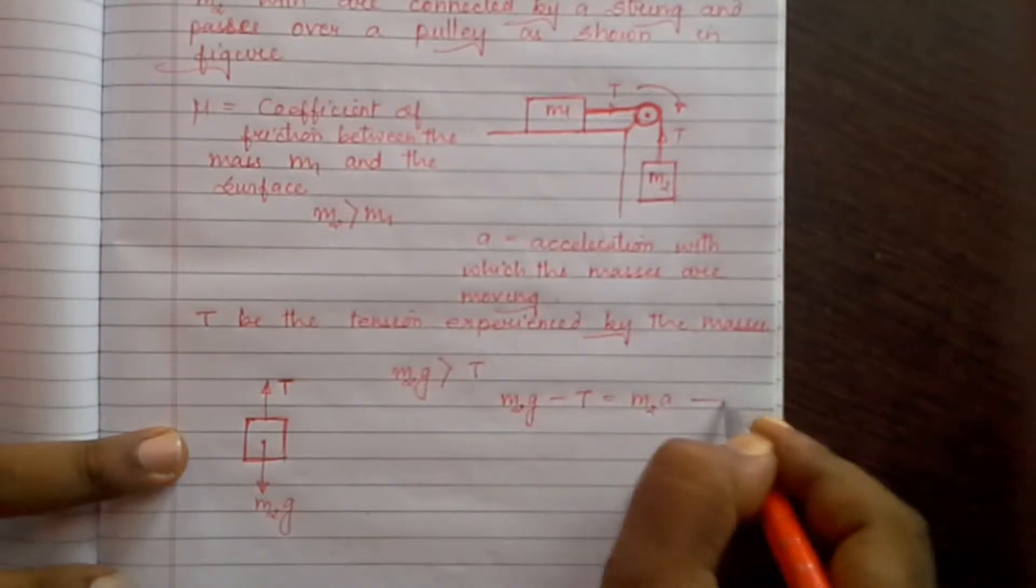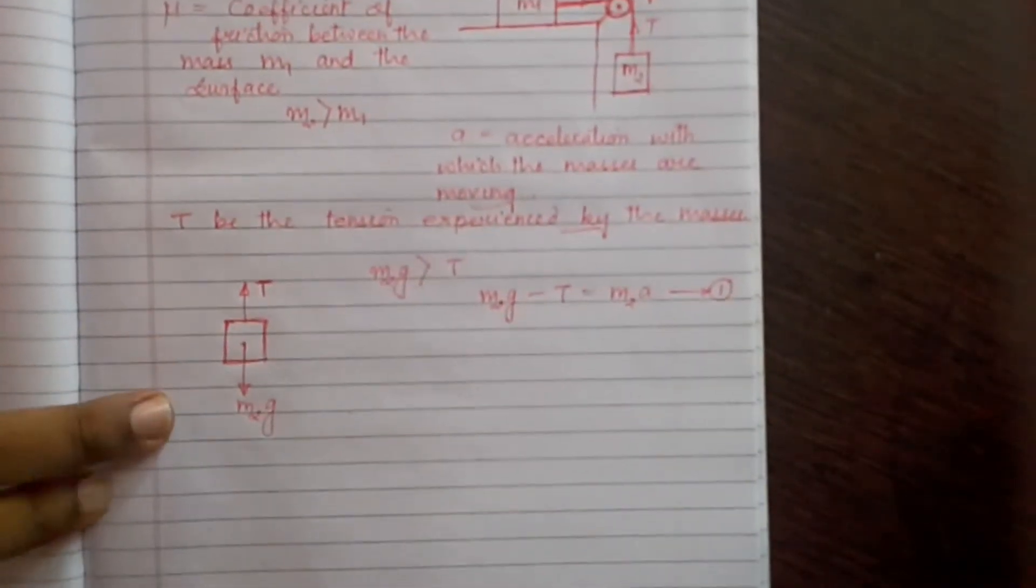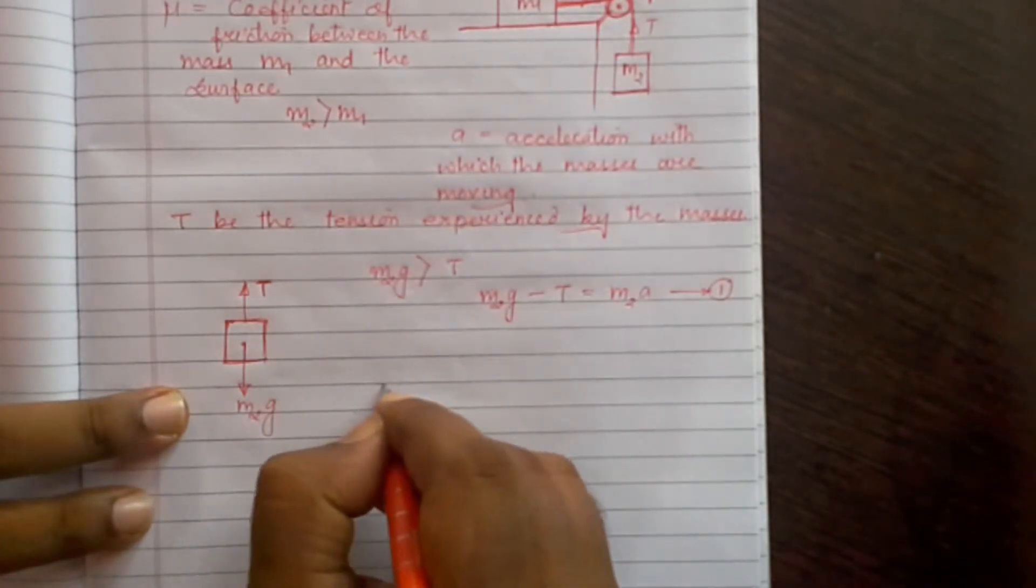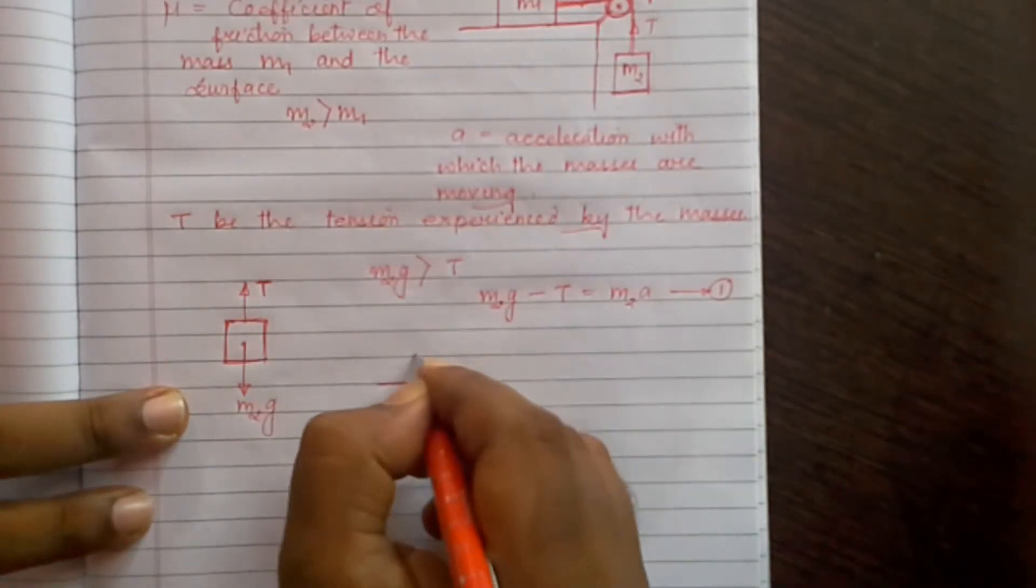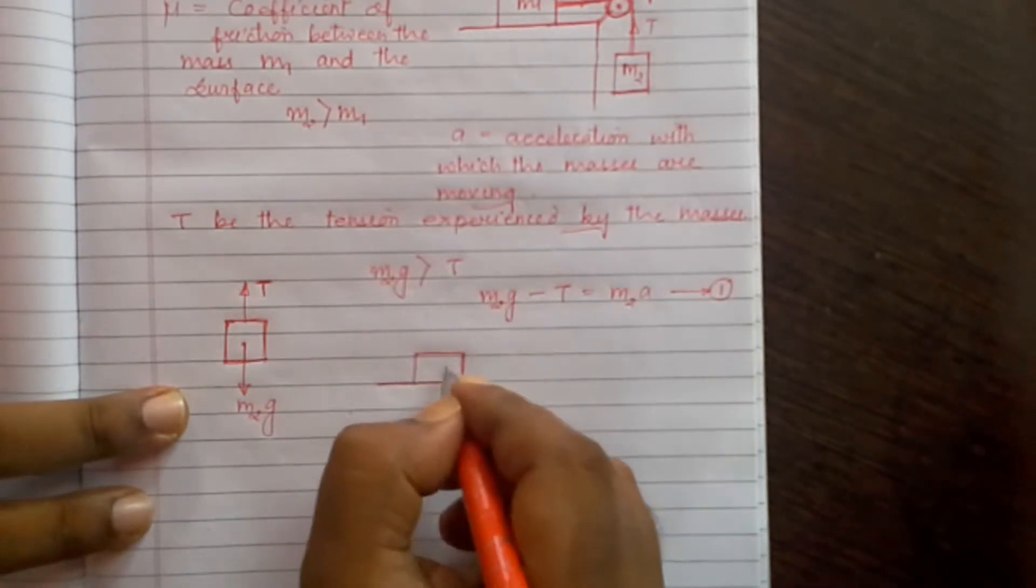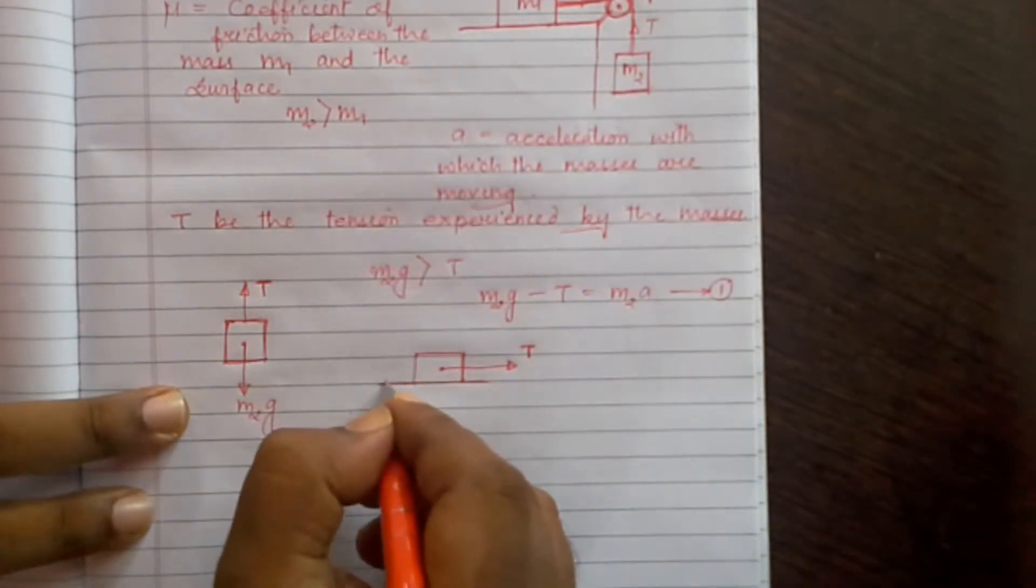Now let us come to mass M1. So mass M1 is lying on the horizontal surface. Here tension will act forward, and to balance it, the force of friction will act in the backward direction.